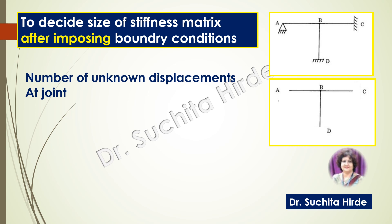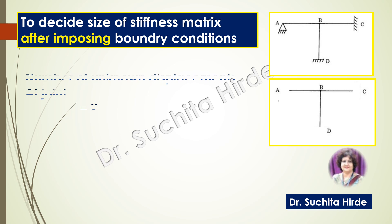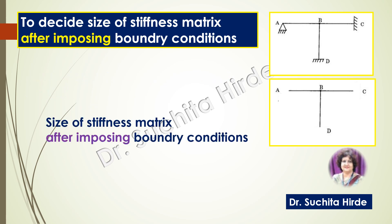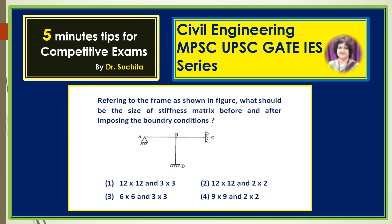Therefore in this frame there are two unknown displacements, that is θA and θB. So the number of unknown displacements is 2, and therefore the size of the stiffness matrix after imposing boundary conditions is 2 by 2. The correct answer for this question is: size before imposing boundary conditions is 12 by 12, and after imposing boundary conditions is 2 by 2.